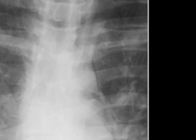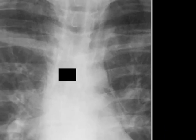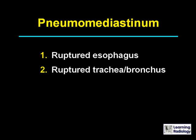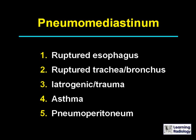This is the next differential: pneumomediastinum. There are five causes: ruptured esophagus, ruptured trachea or bronchus, iatrogenic or traumatic, asthma, or sometimes pneumoperitoneum.